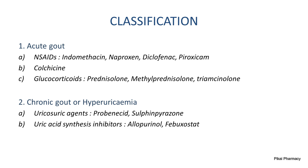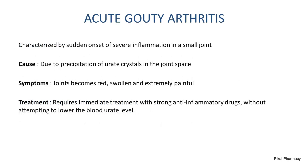According to the type of gout, there are two categories of anti-gout drugs. For acute gout, we use mainly three types: NSAIDs such as indomethacin and diclofenac, colchicine, and glucocorticoids like prednisolone. For chronic gout, we mainly use two types: uricosuric agents and uric acid synthesis inhibitors.